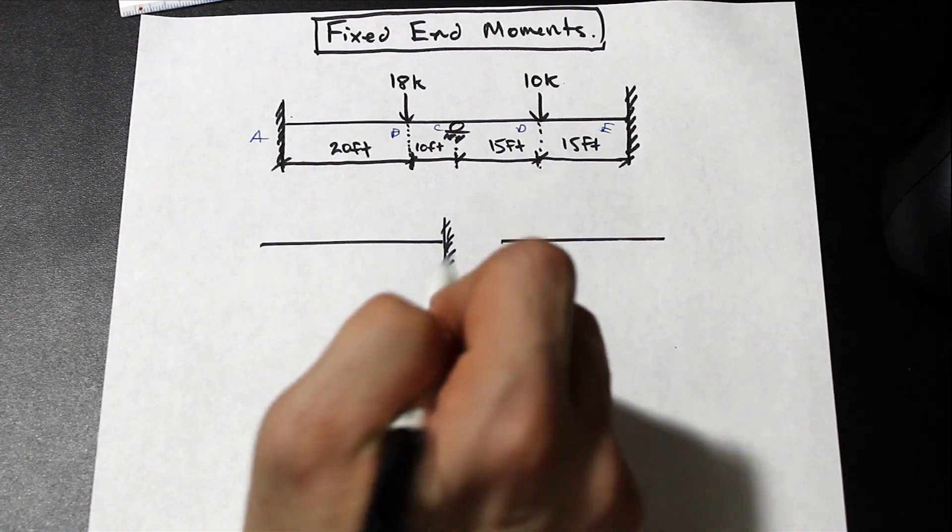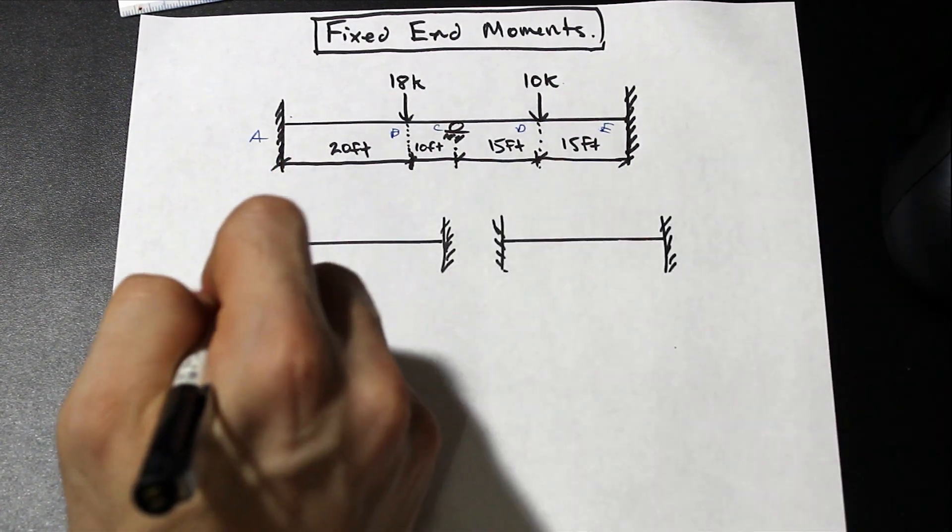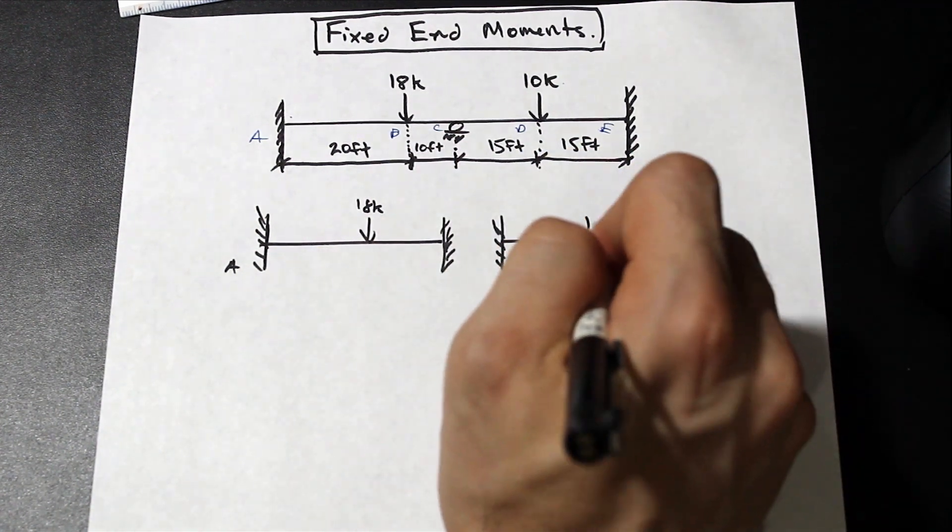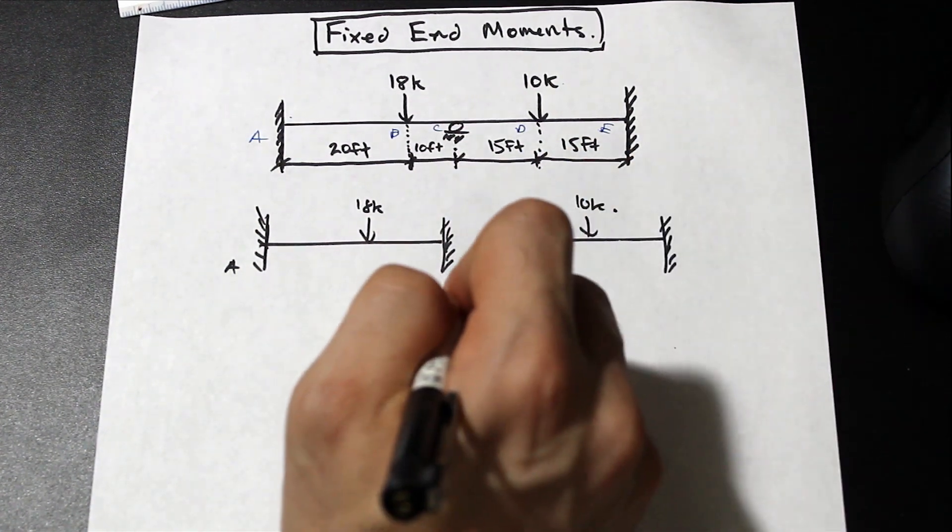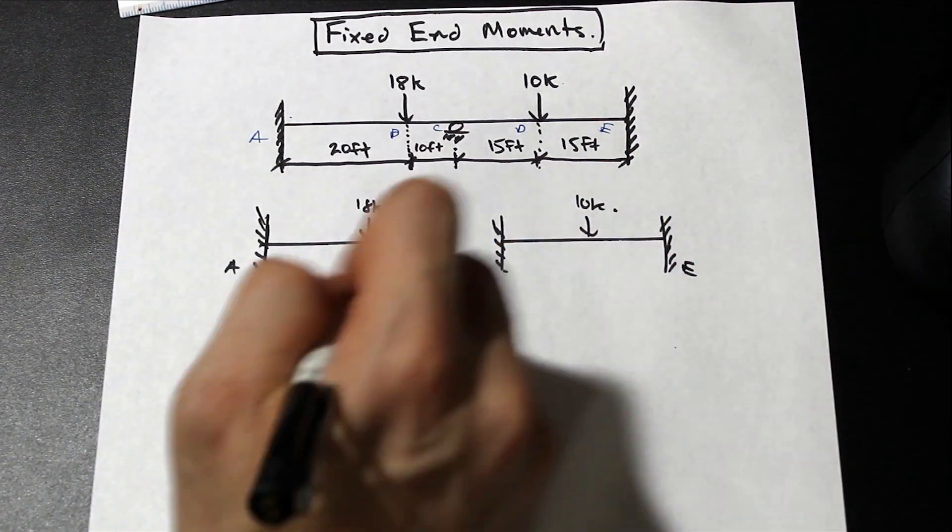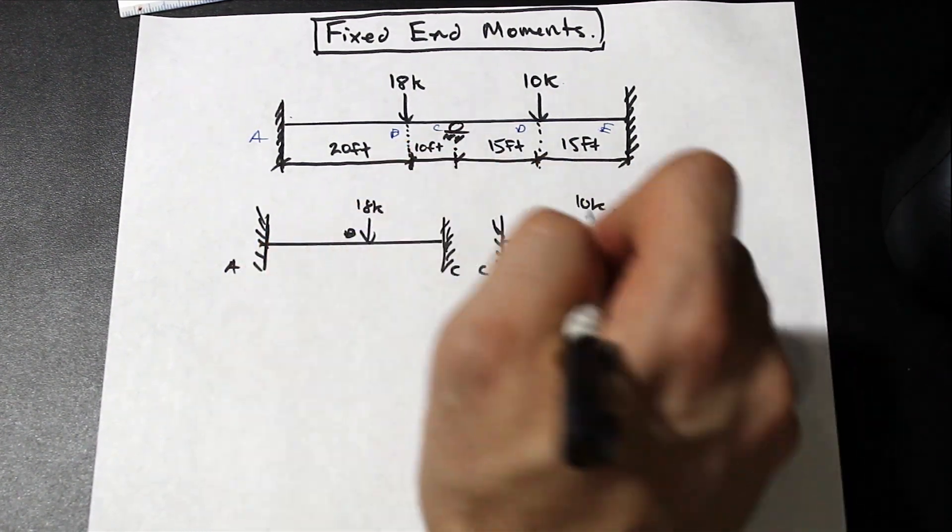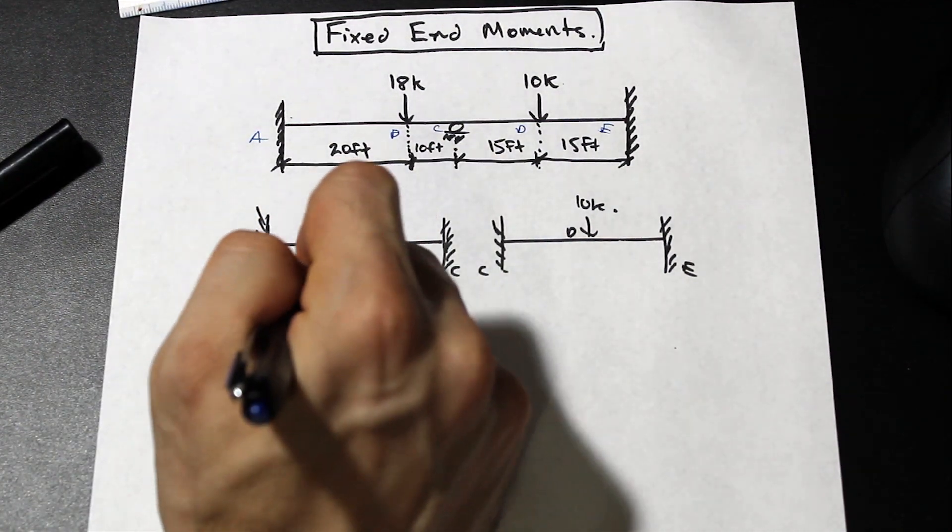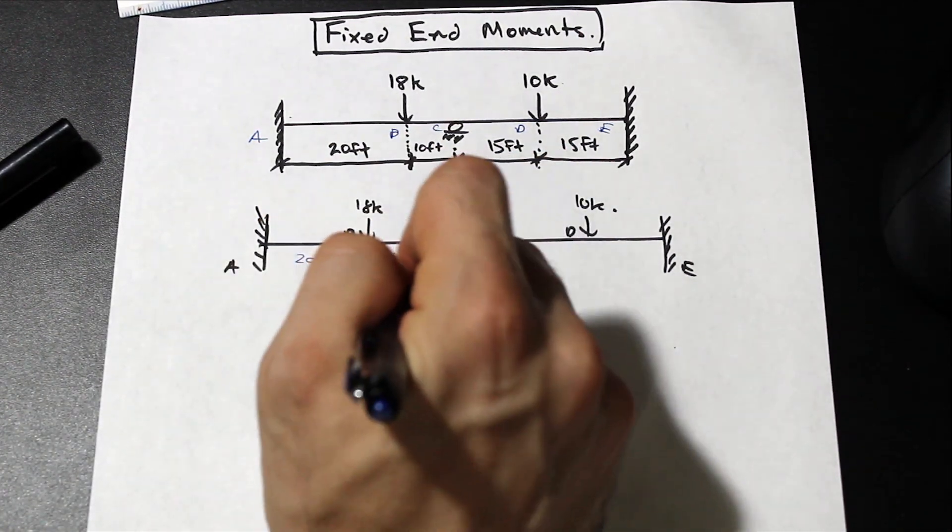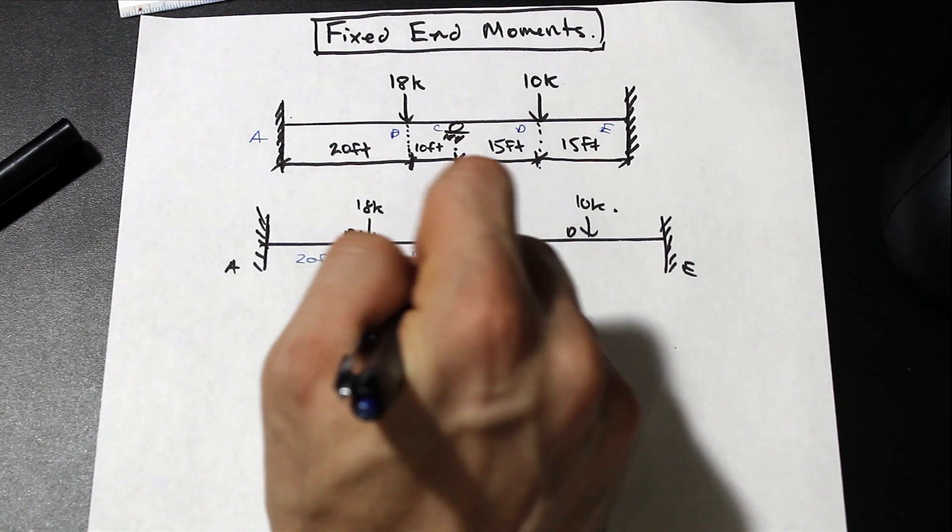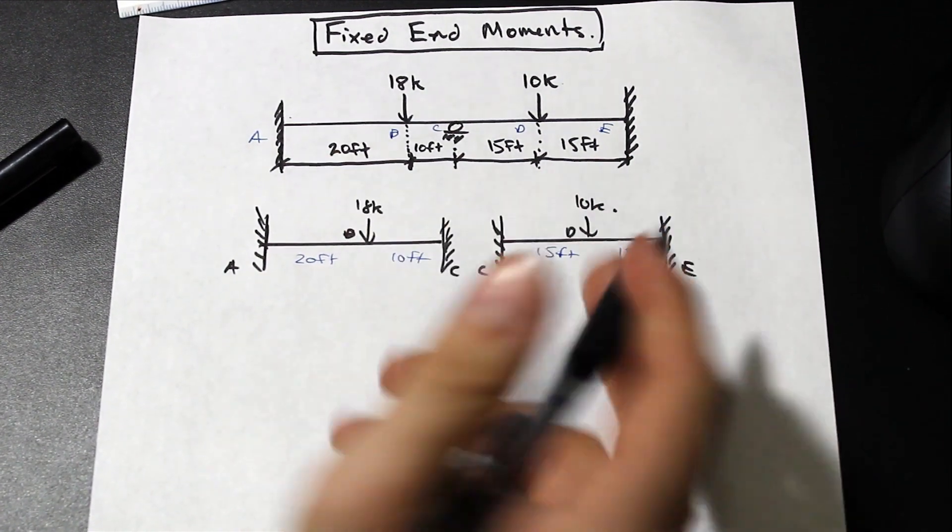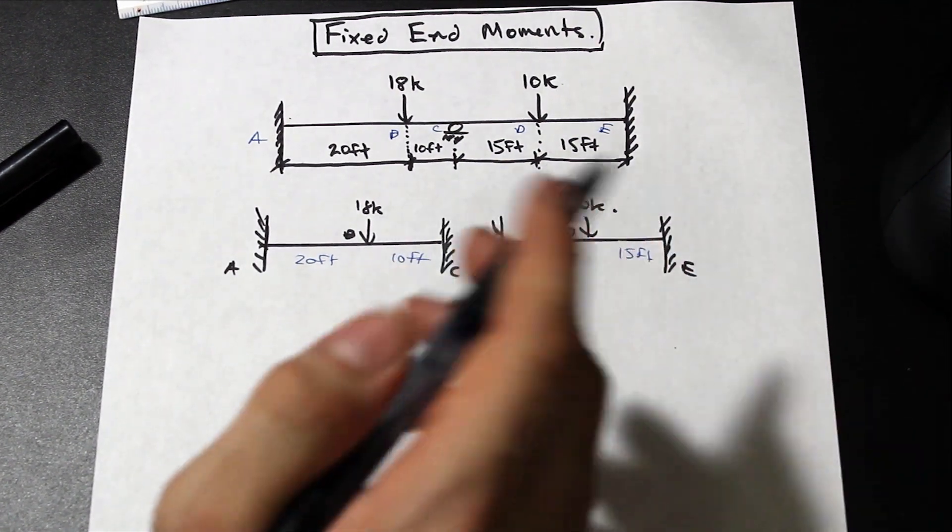We're going to take AC and CE and assume they're fixed. So this is A, we still have the 18 kip here, we have the 10 kip here. This is C, and this is CE. This is going to be B and that's D. As you remember from before, we have the 10, 20 foot, and the 10 foot distances here. You don't have to do this on the exam, I'm just doing it to show you how you split it up.